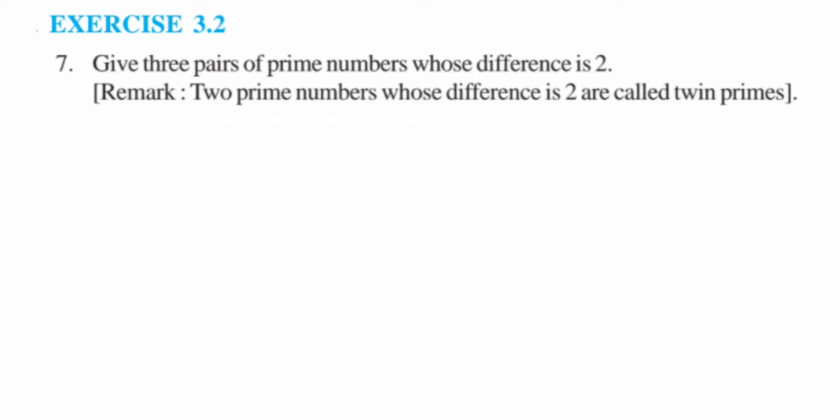So they are called twin primes when the difference between two prime numbers is 2. Now let's find out the twin primes. They're asking us to find three such pairs. We have many such pairs which are twin primes, but we're going to start with small numbers. You can write any other pair if you have any.